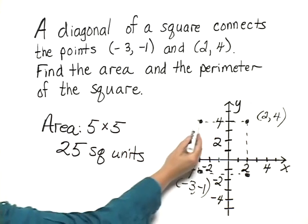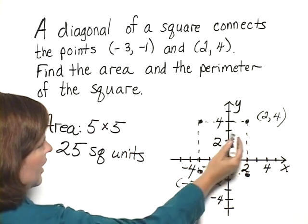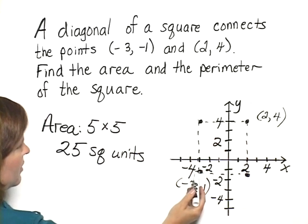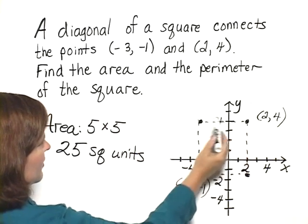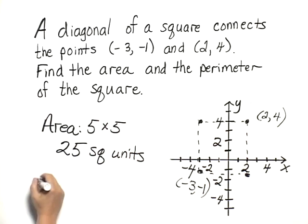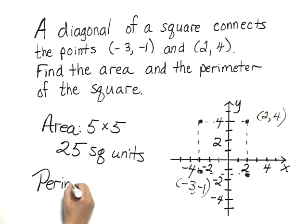The perimeter of the square is the distance around. Well, we found that each side was 5 units long. So we have 5, 10, 15, 20 units. So the perimeter of the square is 20 units.